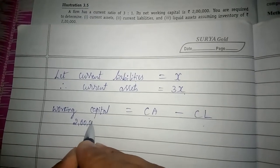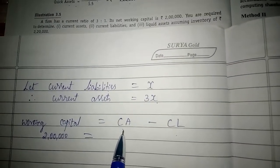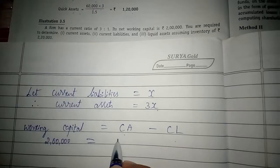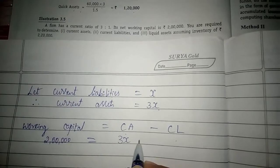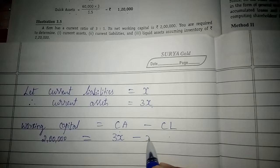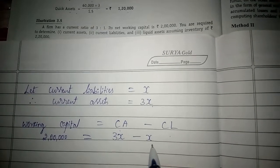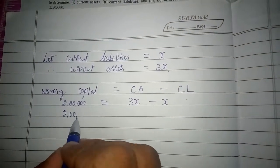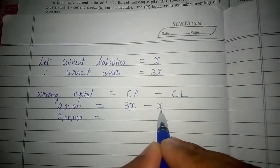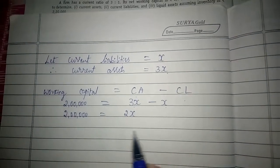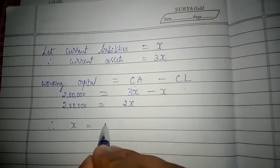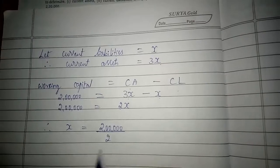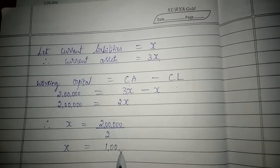2 lakh rupees equals current assets minus current liabilities. Since current assets is 3 times current liabilities, we write: 2 lakh = 3x minus x, which equals 2x. Therefore x is equal to 2 lakh divided by 2, giving x equal to 1 lakh rupees.